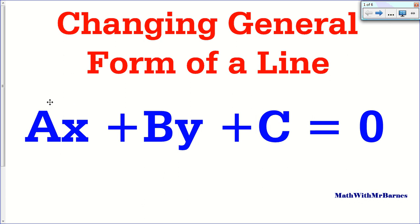So this is the general form of a line: AX plus BY plus C. A lot of times you need to change general form of a line because it doesn't have any real specific purpose for graphing or things like that. Y equals MX plus B, slope-intercept form, or slope-point form are really good for graphing. General form has its other purposes like solving systems, but for graphing it's not the best form to use. So often times you have to algebraically rearrange it to make it more useful.